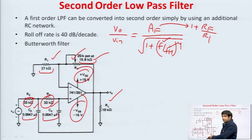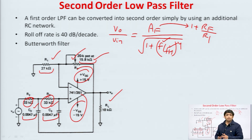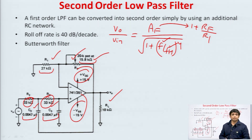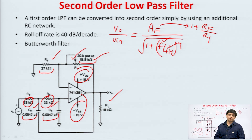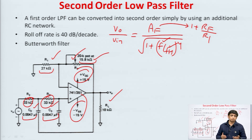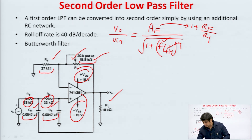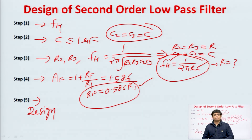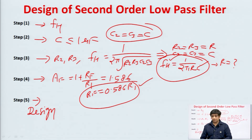You can take any other value of R1 also — there is no issue; the answers will be different but ultimately the cutoff frequency will be the same. In the last step, design the circuit and do not forget to mention the values of the components. The component values are very important. You can see that C2 = C3 = 0.0047 microfarad, and corresponding to this value of C we get R = 33 kilohm. If R1 = 27 kilohm then Rf = 15.8 kilohm. When you simulate or build this circuit and draw the frequency response, the cutoff frequency will be approximately 1 kHz.